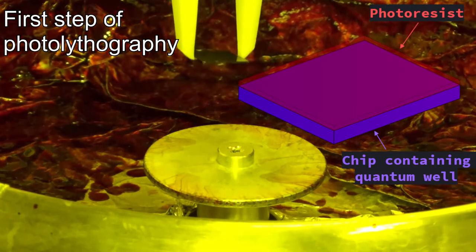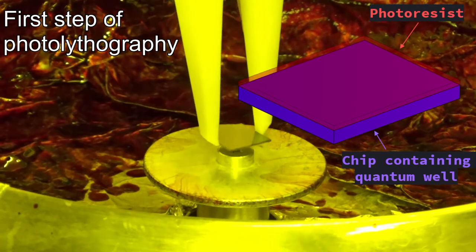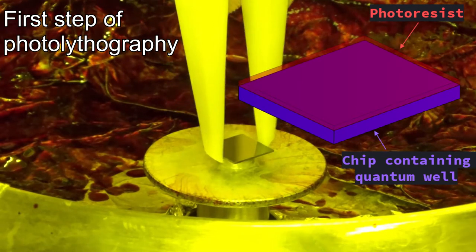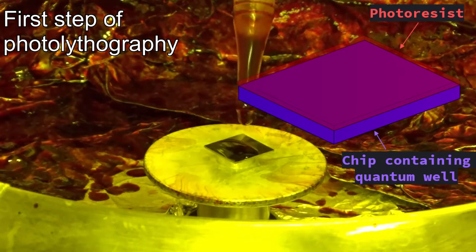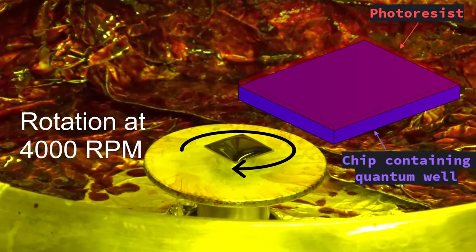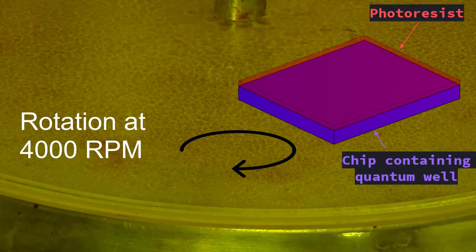Next, we produce a microscopic pattern on this chip using the process of photolithography. We apply a polymer liquid called photoresist to the chip surface, and then spin the chip to create a uniform coating.